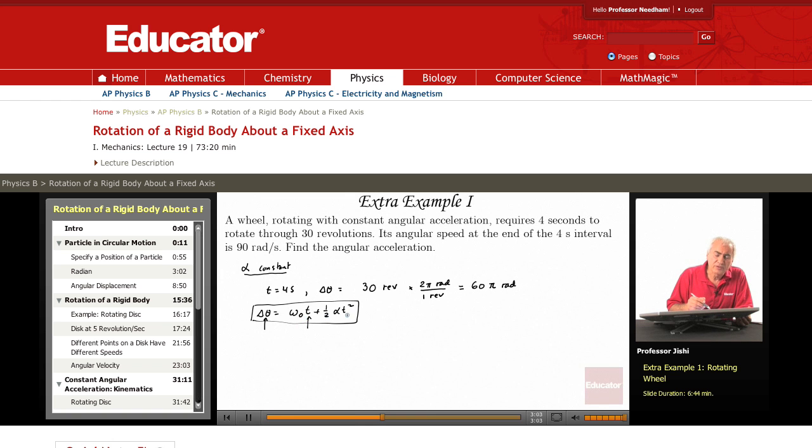If that's all I'm given, of course, I cannot find alpha. But I'm given something else. We're told that the angular speed at the end of the four second interval is 90 radians per second.